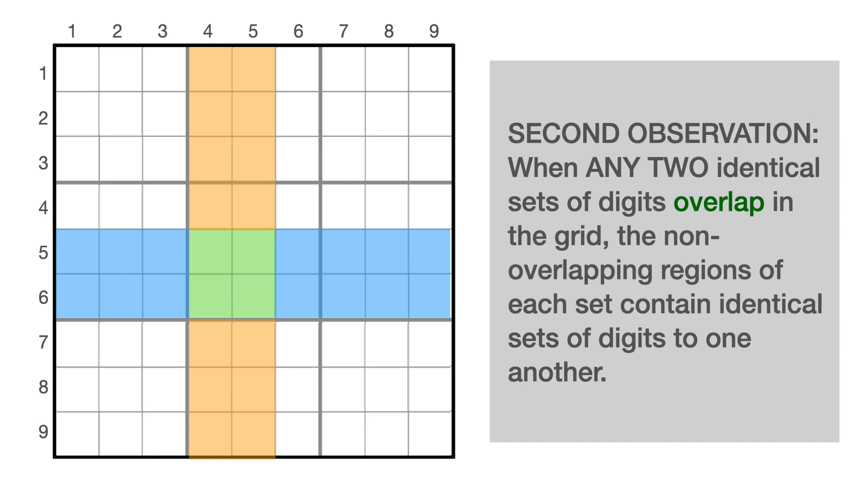Which allows us to make our second observation. When any two identical sets of digits overlap in the grid, the non-overlapping regions of each set contain identical sets of digits to one another, not just overlapping sets of the digits one through nine, any overlapping sets of identical digits. Sudoku nerds like to call this set equivalence theory, which is very fancy of them, but hopefully you can understand it intuitively now and see that there's nothing really all that fancy about it.